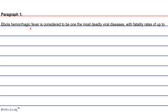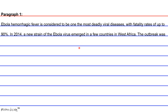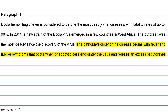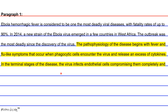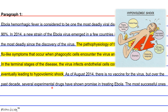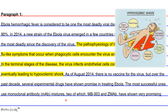Paragraph 1. Ebola Hemorrhagic Fever is considered to be one of the most deadly viral diseases, with fatality rates of up to 90%. In 2014, a new strain of the Ebola virus emerged in a few countries in West Africa — the outbreak was the most deadly since the discovery of the virus. The pathophysiology begins with fever and flu-like symptoms that occur when phagocytic cells encounter the virus and release an excess of cytokines. In the terminal stages, the virus infects endothelial cells, compromising them completely and eventually leading to hypovolemic shock. As of August 2014, there is no vaccine, but several experimental drugs have shown promise in treating Ebola. The most successful ones use monoclonal antibody mixtures (MAB for short).